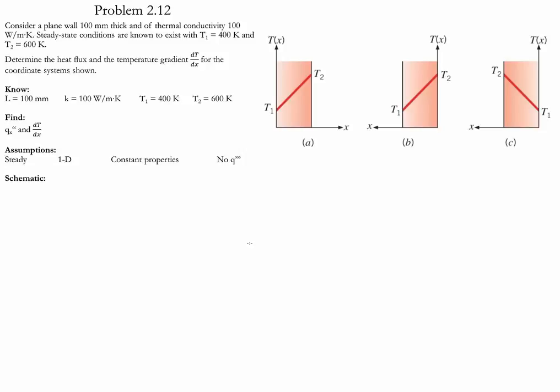We have three different cases in which the location of the origin varies and also the location of the temperature values. The goal is to find the heat flux for each case and the temperature gradient for each one of them.